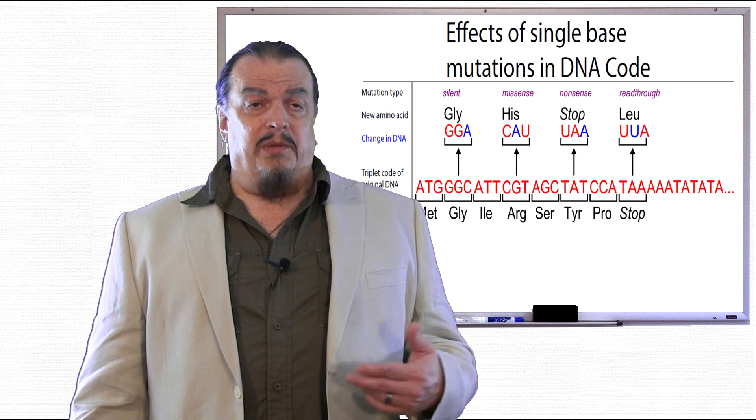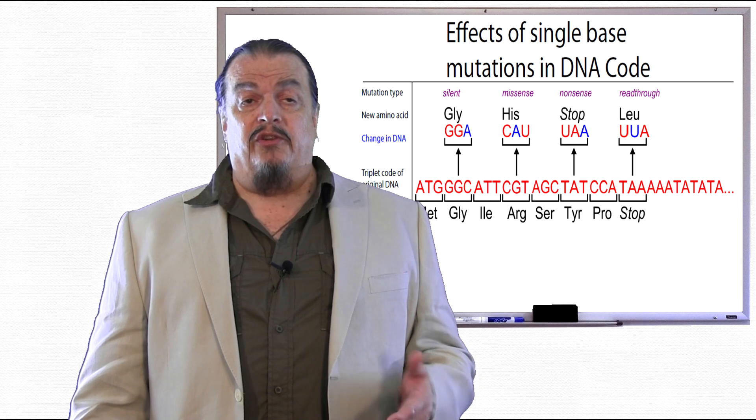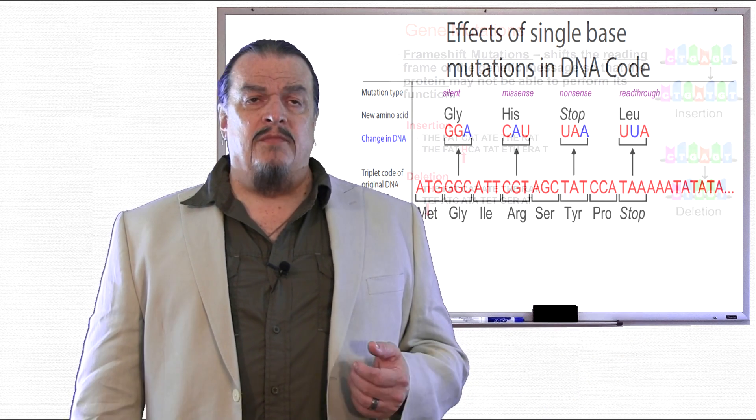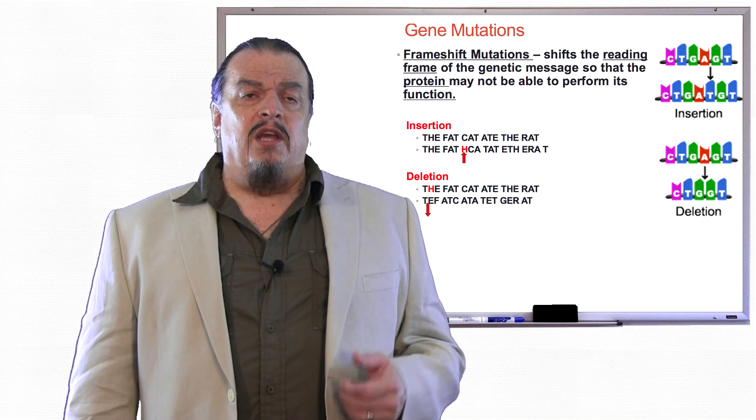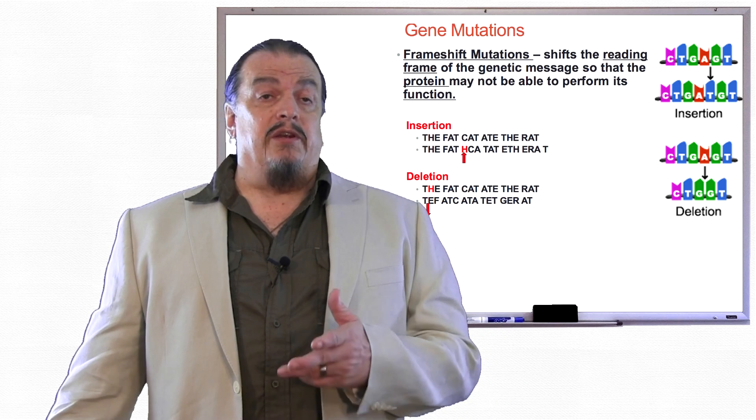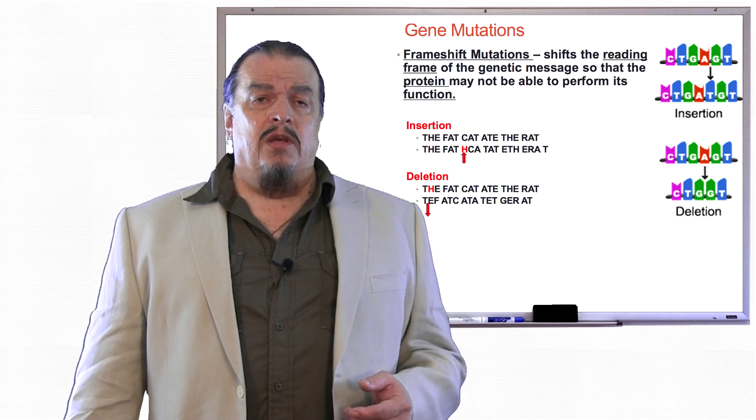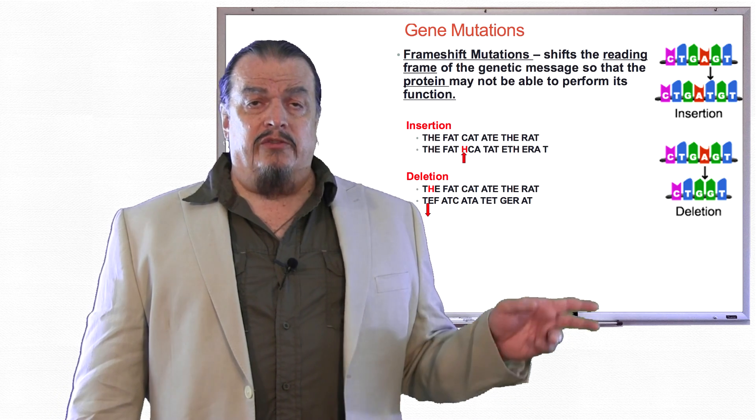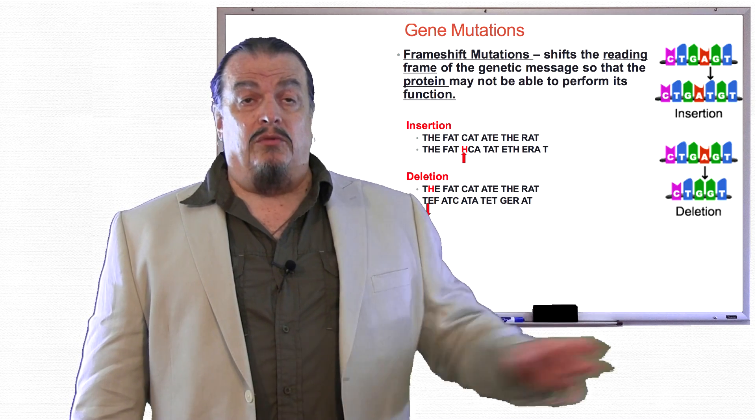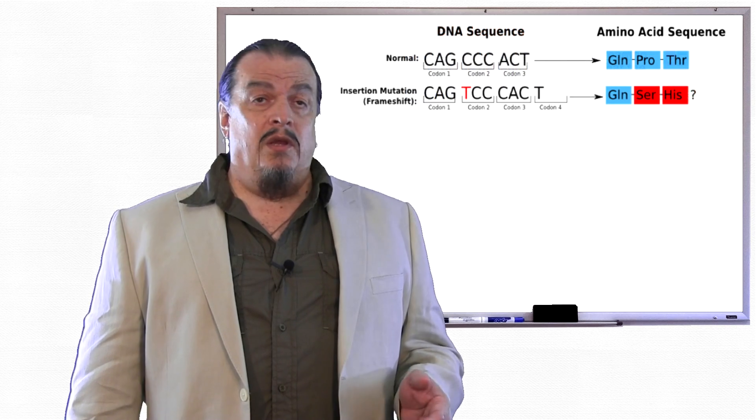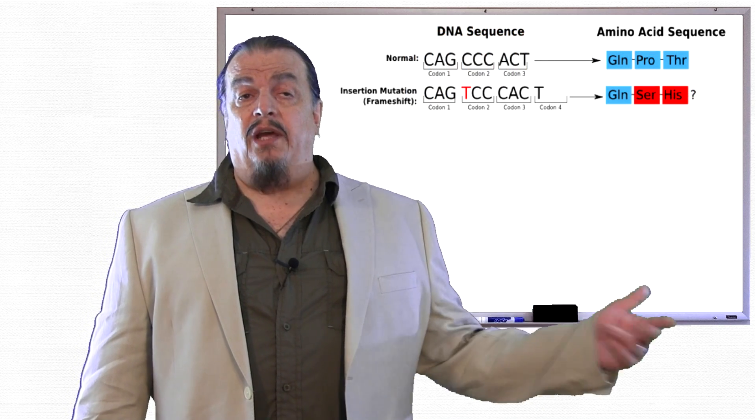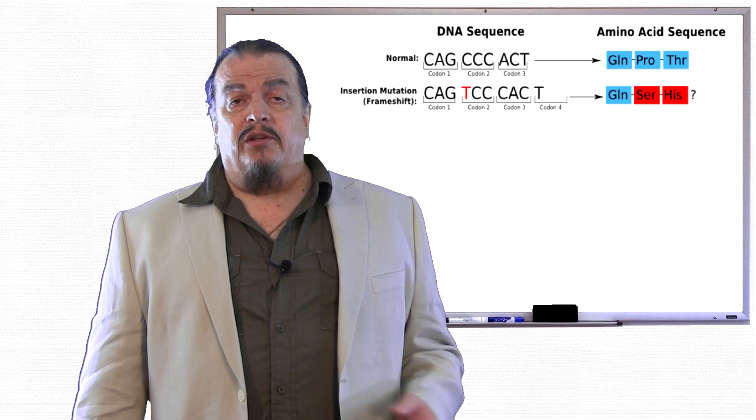And one thing that can happen when a base pair is changed in reading the frame is that it can cause the frame to shift and change the codons that follow them. Like the sentence example of this graphic, inserting or adding an H where it doesn't belong in the sentence shifts all the other letters over, changing the words. Remember, unlike sentences, codons are limited to three letters. So adding a base that doesn't belong can shift the whole reading frame to the right. And the opposite can happen when you delete a base. The reading frame shifts to the left, and you're missing one base pair at the end.